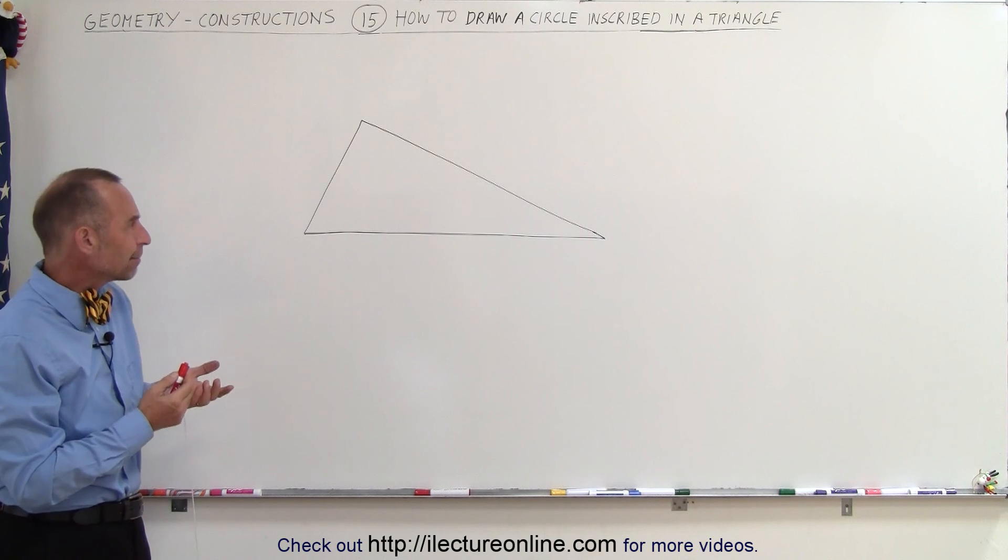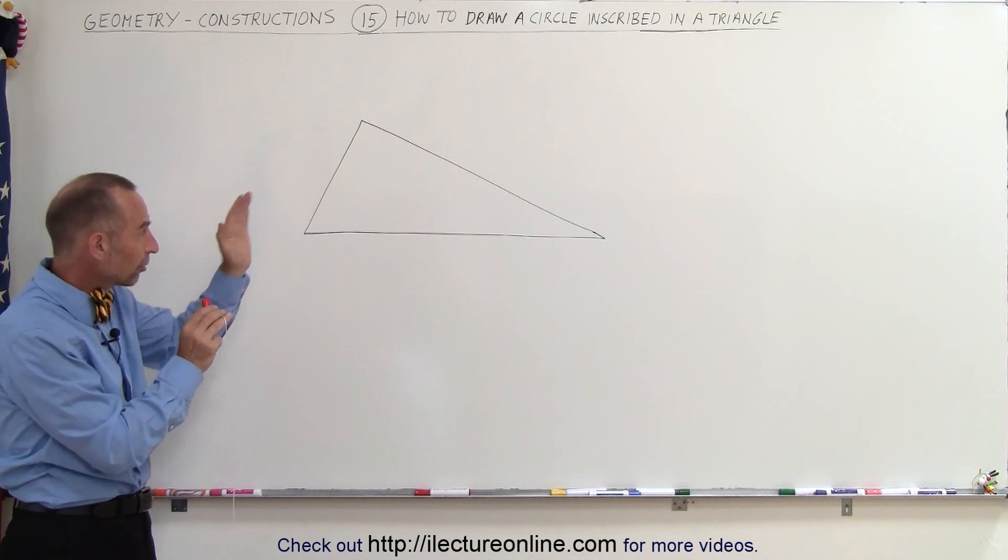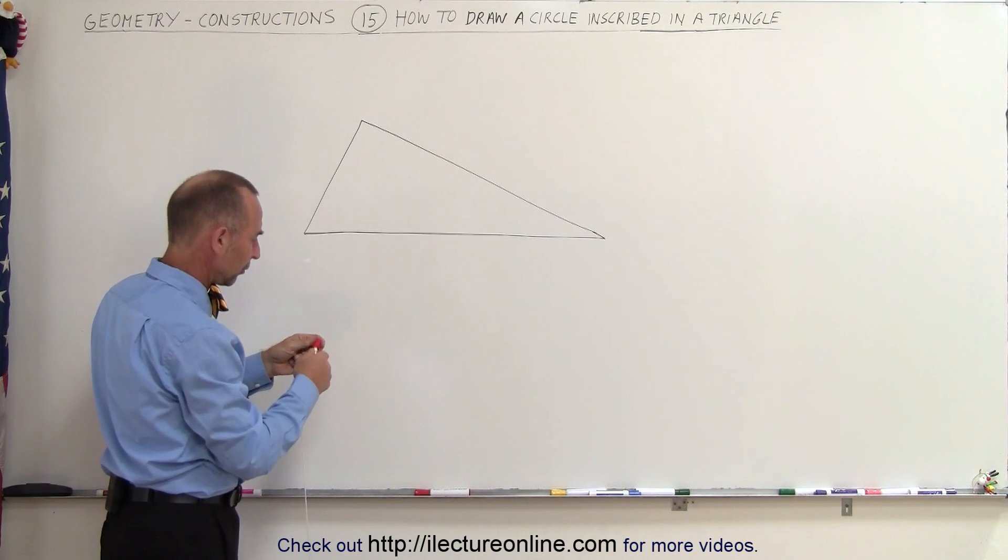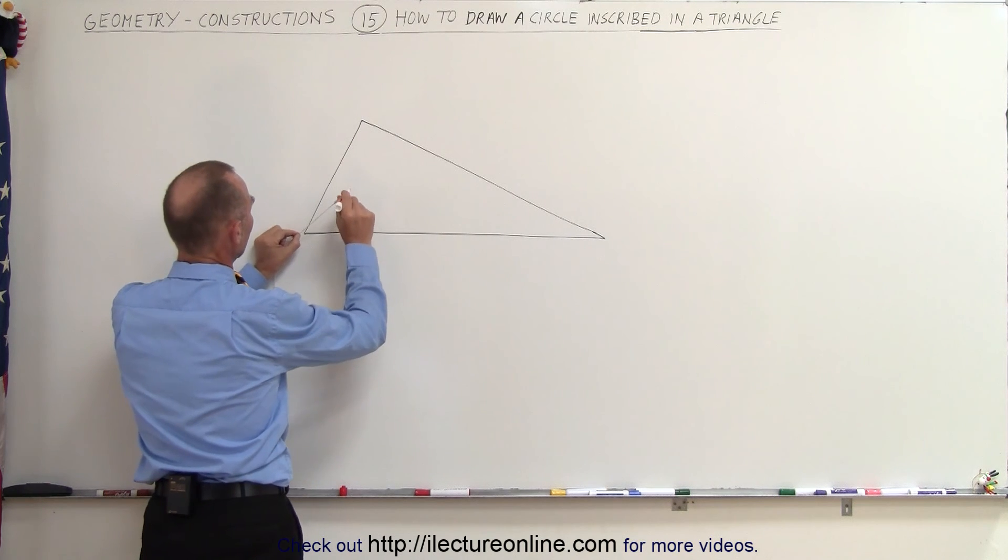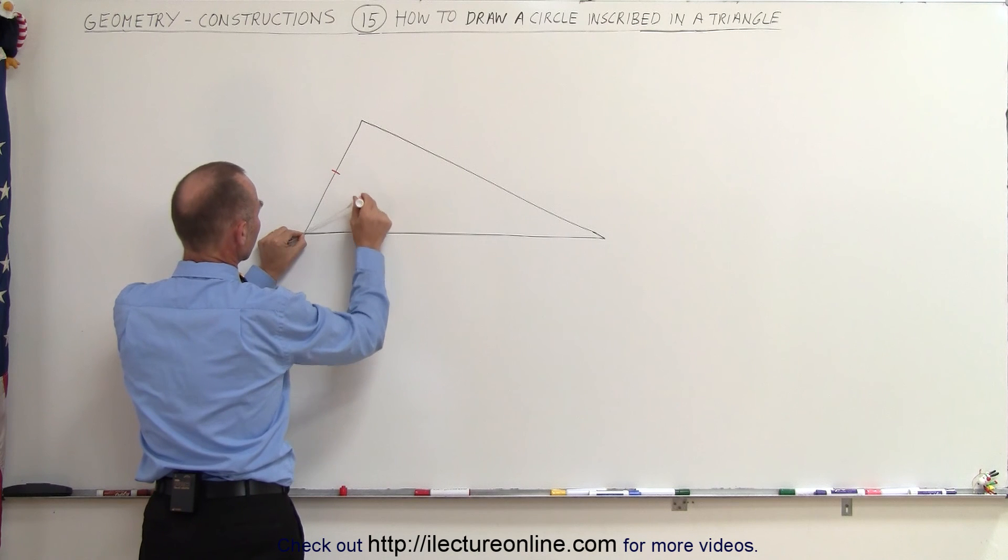Well we need to find that midpoint so that we can draw the circle in such a way that touches the three sides. To do that we go to each of the three points, and of course you need a compass, and you make the compass in such a way that you can make a little tick mark over here and a tick mark over here.